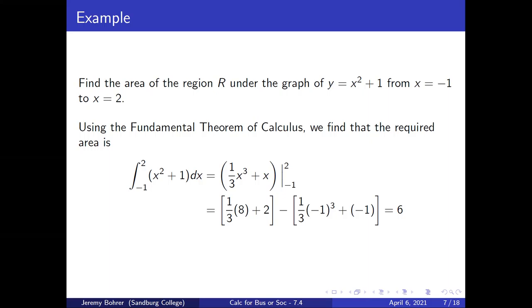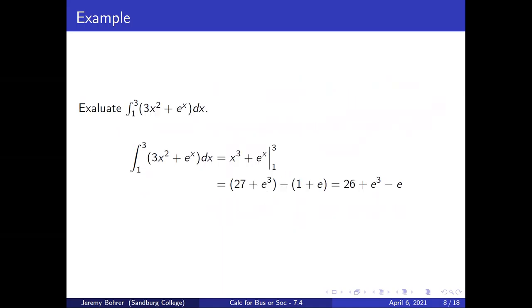Find the area of the region R under the graph of y = x² + 1 from x = −1 to x = 2. Using the fundamental theorem of calculus, the required area is the integral from −1 to 2 of (x² + 1) dx, which equals (1/3)x³ + x evaluated from −1 to 2, which equals [(1/3)(8) + 2] minus [(1/3)(−1)³ + (−1)], which is equal to six.